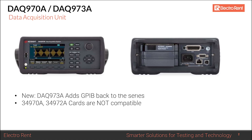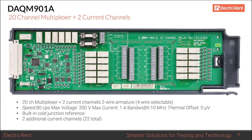The first card is the DAQM901A, similar to the legacy 34901A. It's a 20-channel multiplexer using reed relays and is the preferred card for thermocouples, with a thermal offset of zero microvolts. It has a built-in cold junction reference, 20 scanning channels for thermocouples, and additional channels for current measurements. It scans at 80 channels per second — reed relays need settling time — with a maximum of 300 volts and 1 amp.